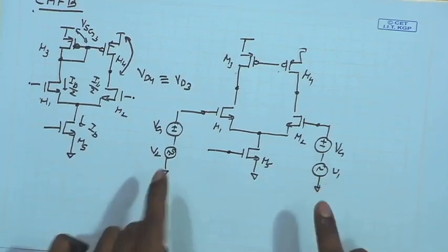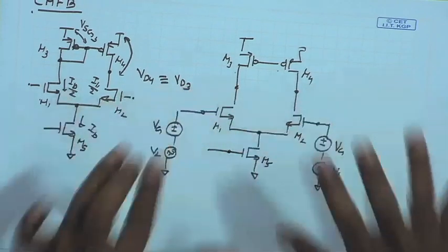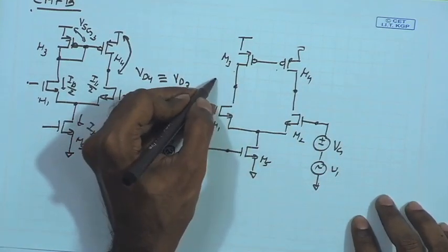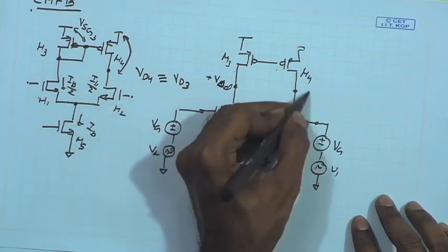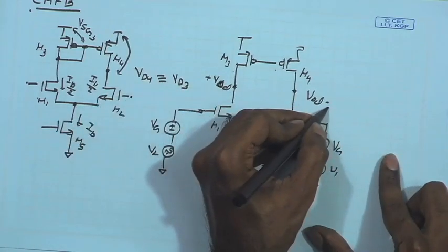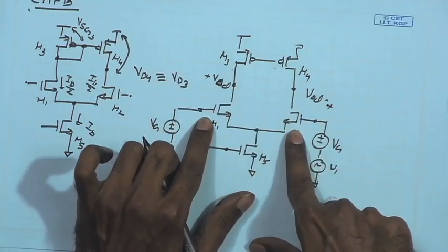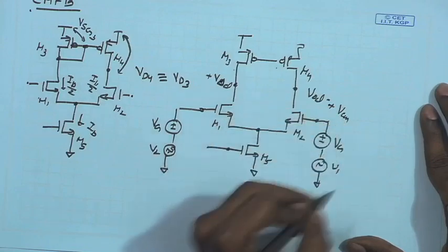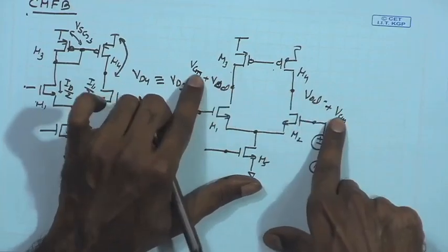Assuming the common mode gain is poor, we do not consider the common mode signal at the output. We consider only the differential signal V_od_plus and V_od_minus. The output can be expressed as the differential signal plus the common mode level, which can include both DC and AC components. If the common mode gain is sufficient, there may also be a common mode AC signal V_cm, so the output is not just DC but may include a common mode AC signal as well.